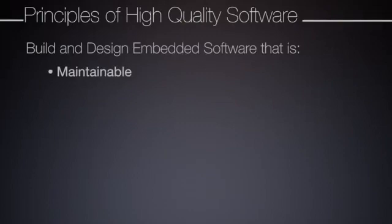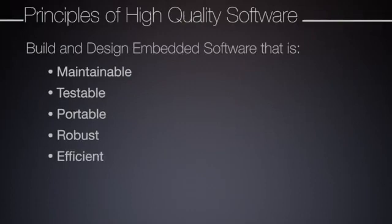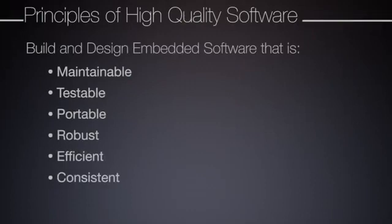This list includes, but is not limited to, writing code that is maintainable, testable, portable, robust, efficient, and consistent. By keeping these tenets in mind, you can ultimately write better code, speed up development by reusing old code, and produce consistent bug-free software.